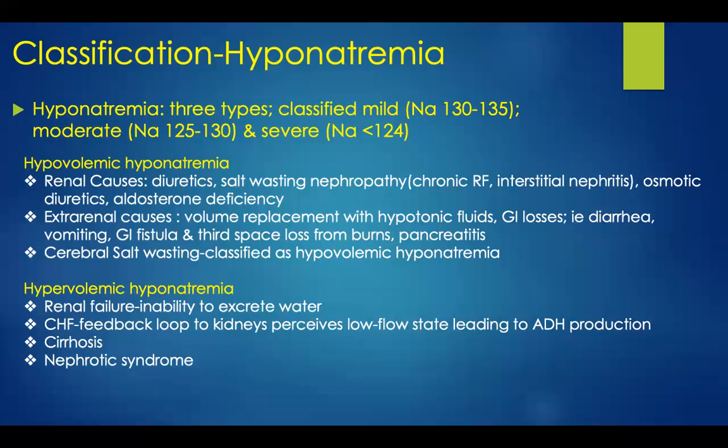The second type of hyponatremia is hypervolemic hyponatremia. This has multiple causes, including renal failure — whereby there's an inability to excrete water — congestive heart failure, in which a feedback loop to the kidneys perceives a low flow state leading to ADH production, cirrhosis, and nephrotic syndrome.